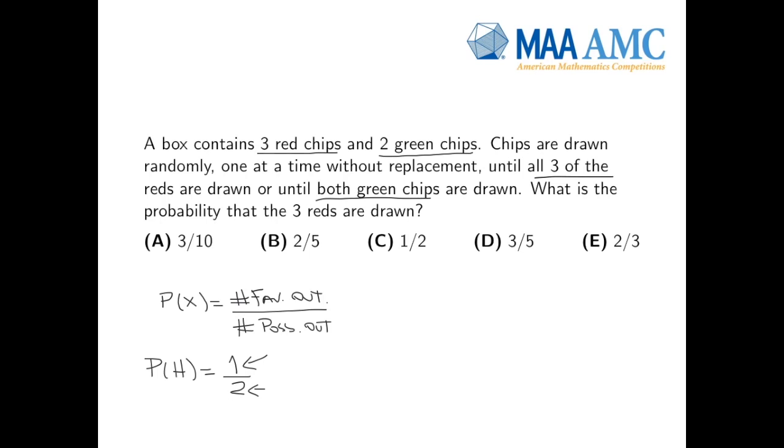And so the probability that the three reds are drawn is also sort of the probability that you get the three reds before you get both green chips. Now, the easiest thing to do here is to really think about what are all the possible outcomes.